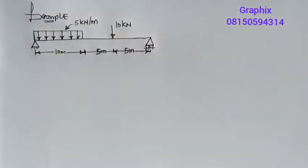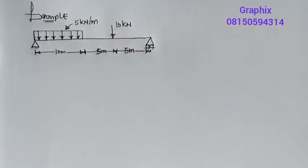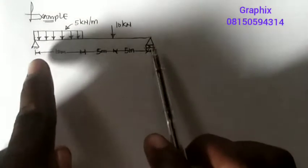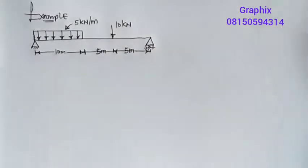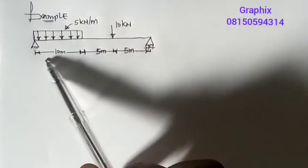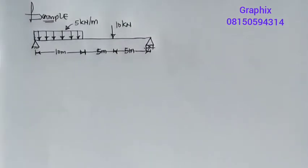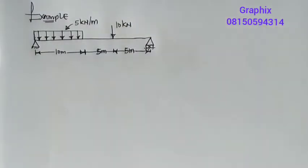We have a beam, and this kind of beam is called a simply supported beam because it is resting on two supports. The first support is a hinge support, and the second support is called a roller support.